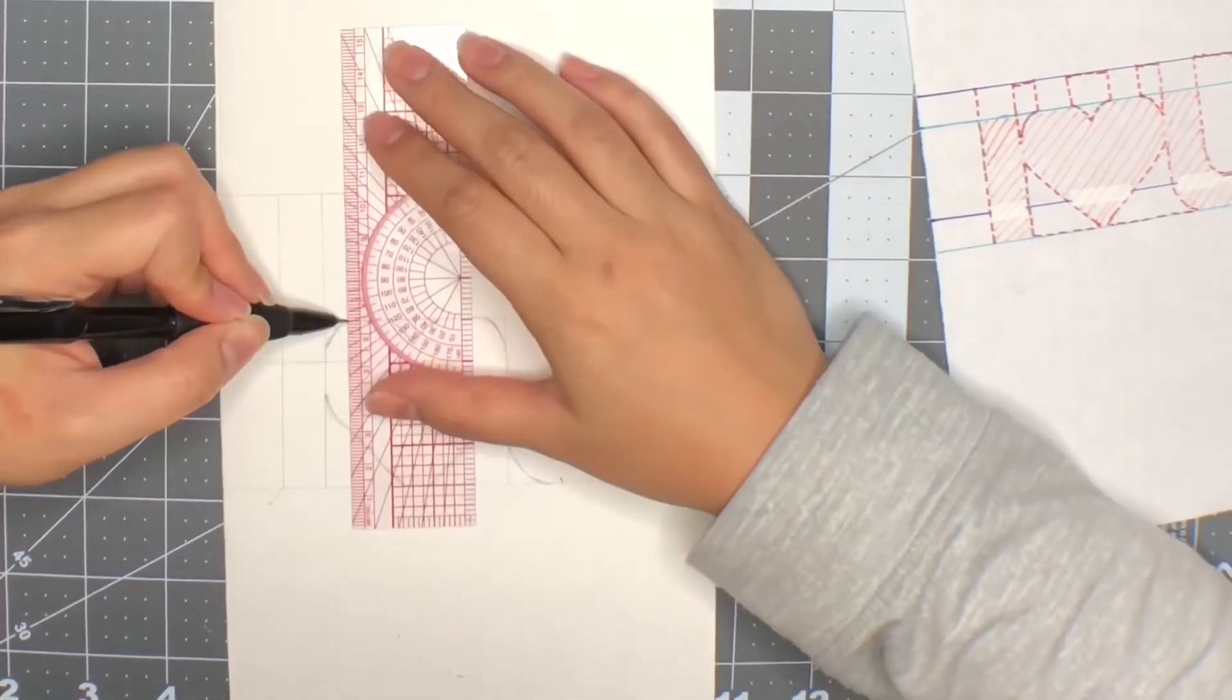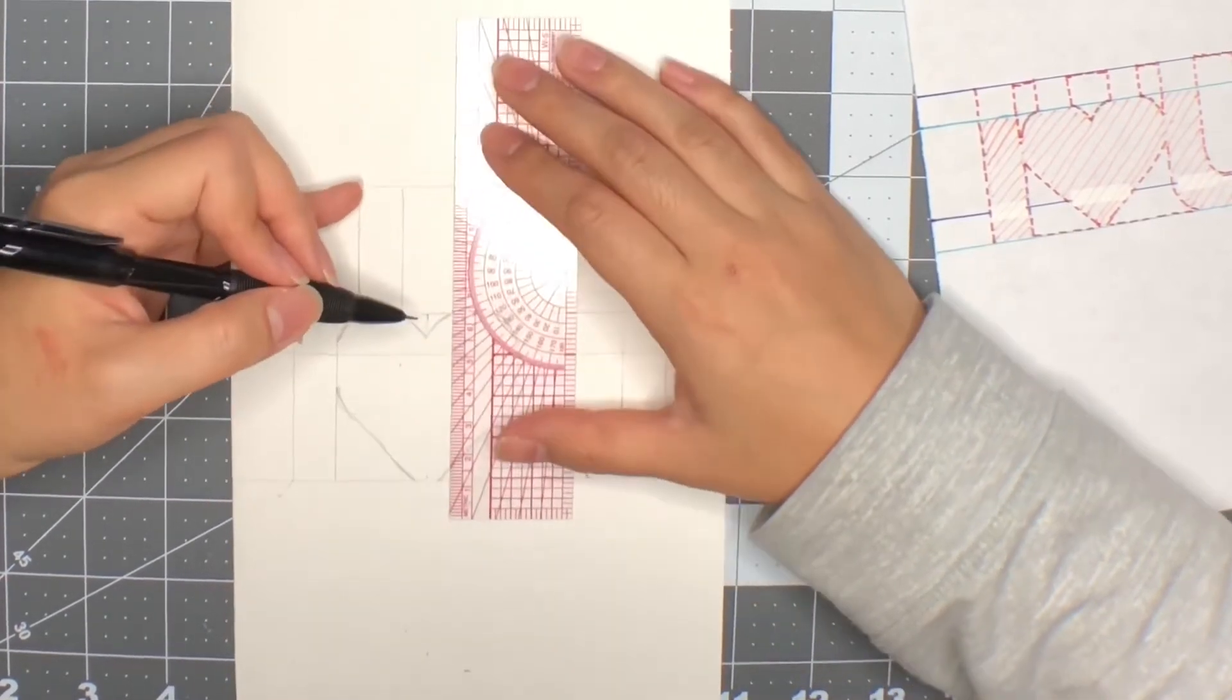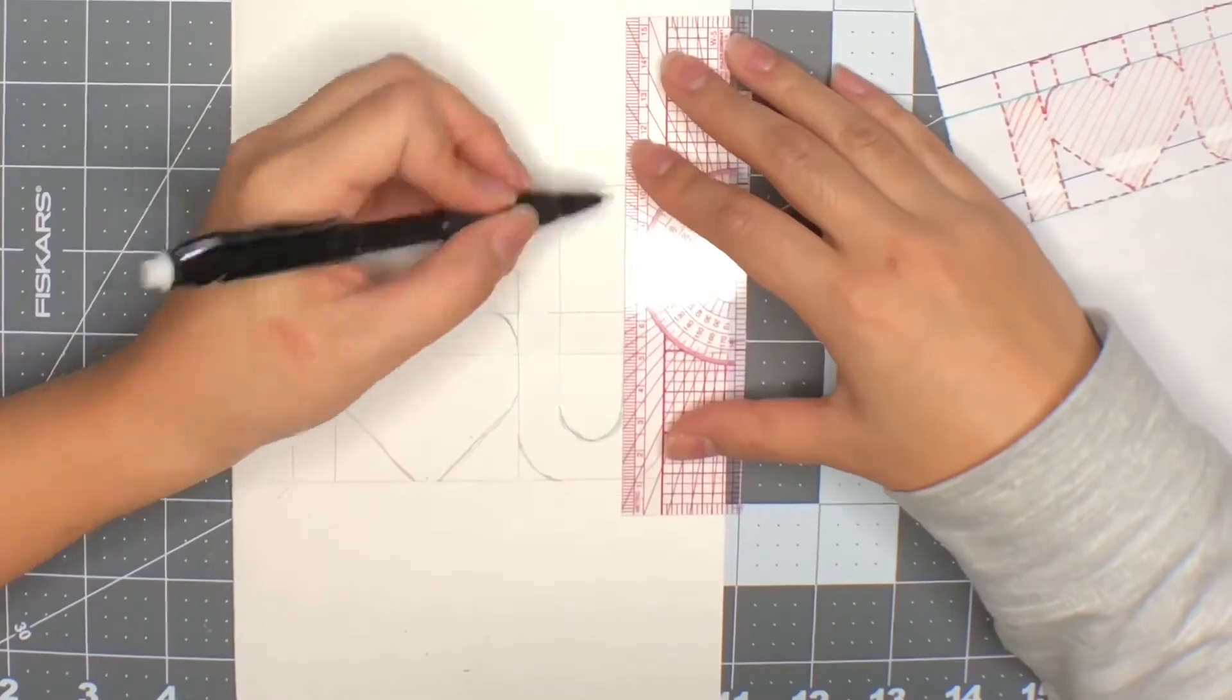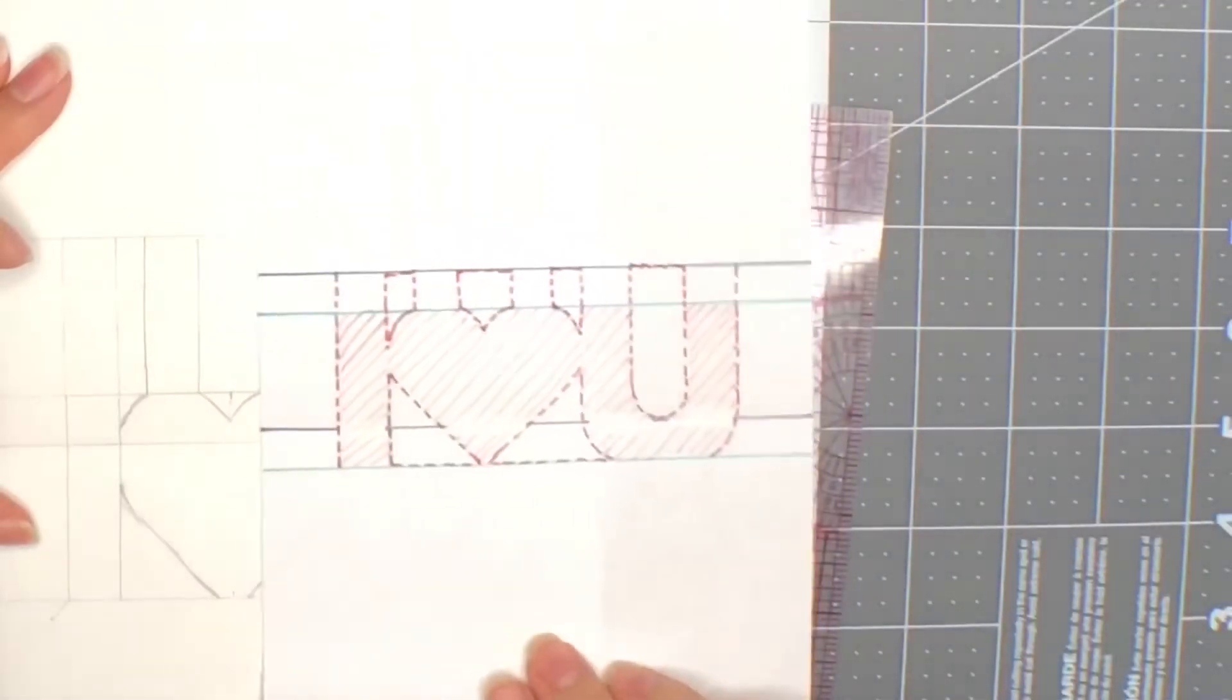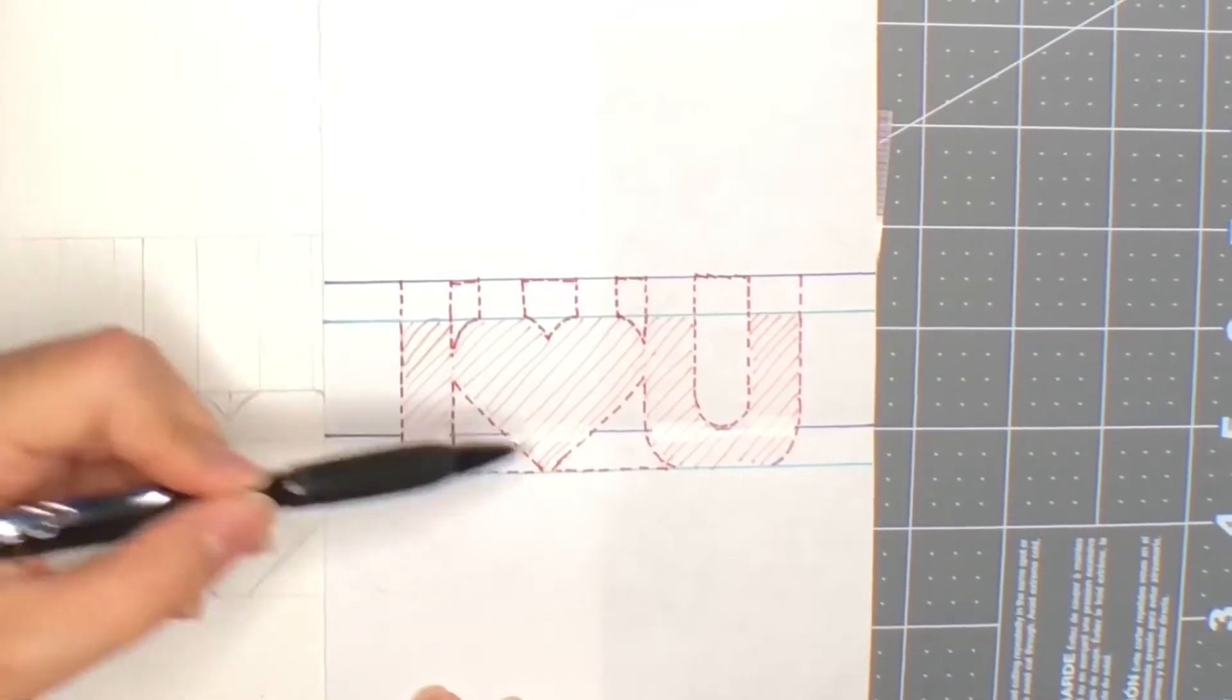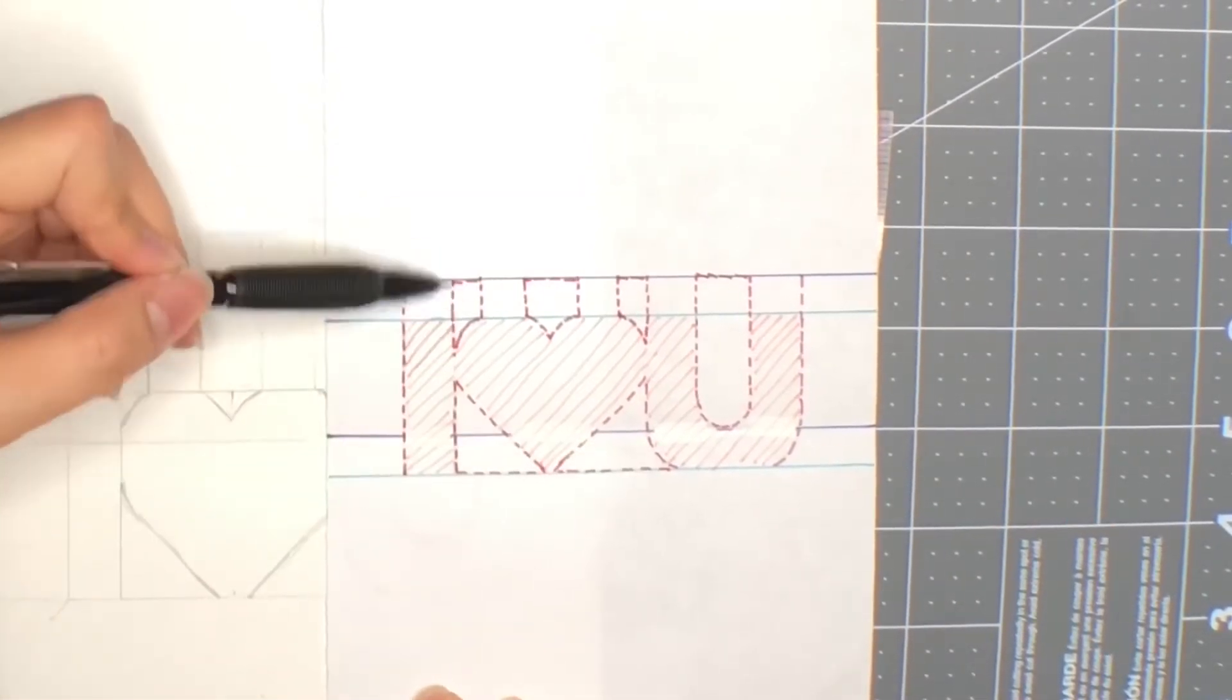Now we will create vertical lines from the top of the letters to the upper line. Using the visual aid, you will cut along the red dotted lines. And the sections here are the ones you want to cut out completely.